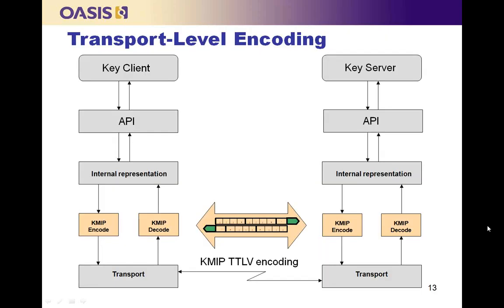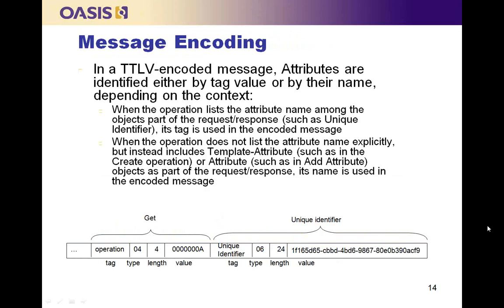The request and response messages are encoded at the transport level. Each object, operation, and attribute is expressed by a tag, followed by an identifier of the data type, then the length and value — known as TTLV encoding. Expressing the message in TTLV enables the protocol to be used in the broadest possible range of environments. Other expressions of the protocol, such as XML or JSON, though not yet specified in the KMIP standard, can be used at higher levels in the stack.